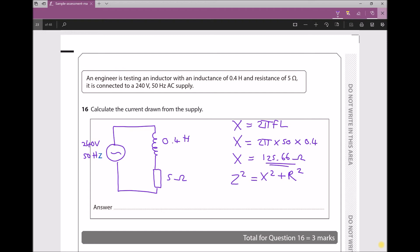So let's calculate our total impedance. We get Z equals the square root of X squared plus R squared. Moving to the line below, Z equals the square root of 125.66 squared plus 5 squared, all square rooted, giving us a Z value equal to 125.76 ohms.